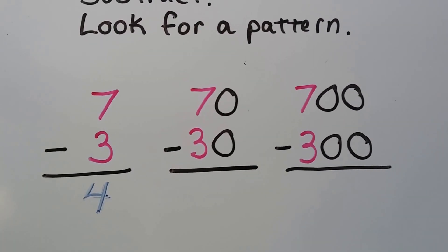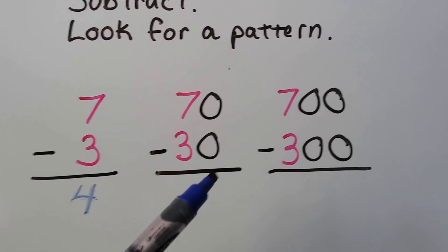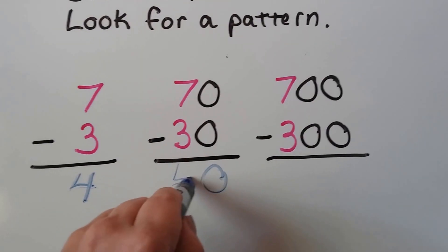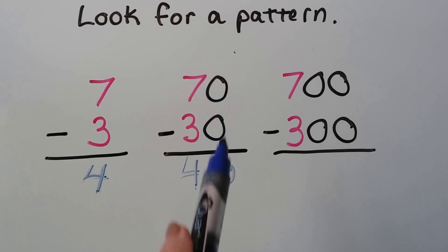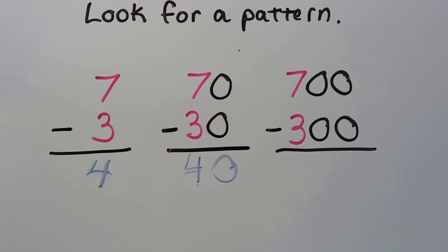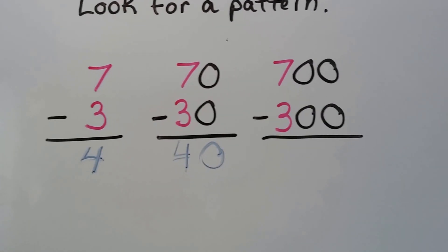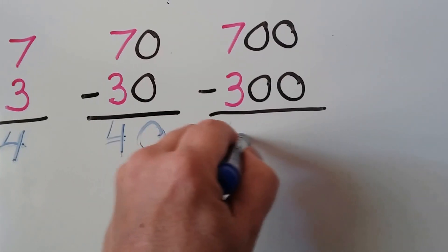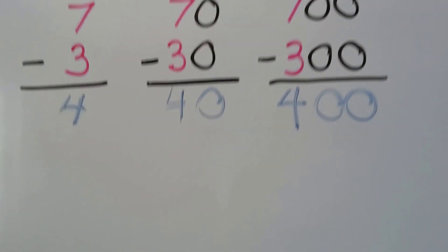Now when we look at seventy minus thirty, we have zeros in the ones place. We do seven minus three, which we know is four, so we get forty. There was one zero in the ones place for these digits, so there's one zero in the ones place for the difference. Now we're going to have two zeros — that's the pattern: no zeros, one zero, two zeros. So seven hundred minus three hundred gives us four hundred.